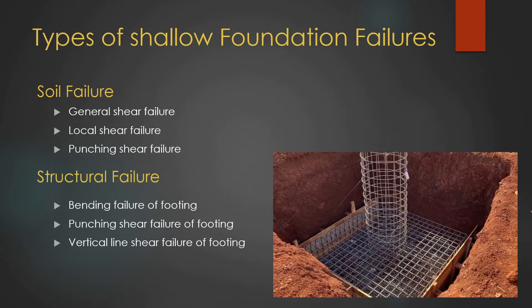There are two main ways that a foundation can fail. The first is geotechnical failure — that is, failure of the soil. The second is structural failure. Geotechnical soil failures can be categorized into three main categories: general shear failure, local shear failure, and punching shear failure.